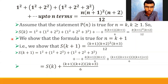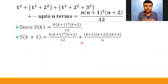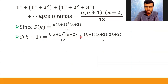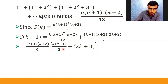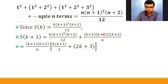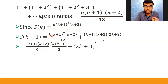Now we know S(k) = k(k+1)²(k+2)/12, so I substitute it. From these two terms, I can take (k+1)(k+2) as a common factor. The 12 can be written as 6×2. Taking k(k+1)(k+2)/6 as common, I'm left with k(k+1)/2 from the first term and (2k+3) from the second term. Taking LCM, this 2 goes to the numerator.